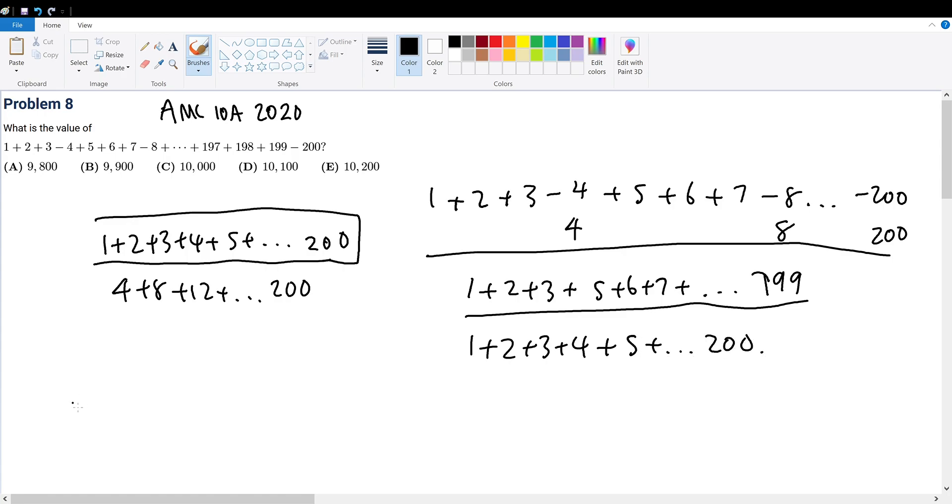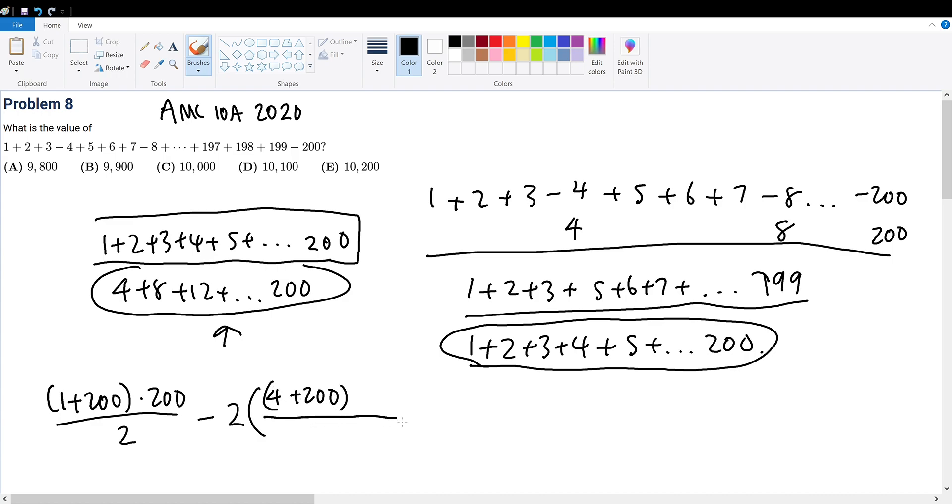So this will be very simple. It's simply this arithmetic sequence sum of this series subtracted by twice the sum of this arithmetic sequence. The arithmetic sequence sum formula is the first term plus the last term multiplied by the number of terms divided by 2. Subtract this from 2 times the sum of this arithmetic sequence, which is 4 plus 200 multiplied by n divided by 2.